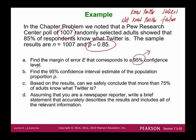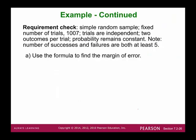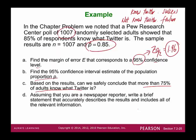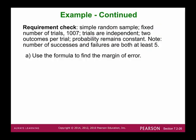Since we have a 95% confidence level, the critical z-score from Table A2 is 1.96. Find a 95% confidence interval to estimate population proportion P. Based on the result, can we safely conclude that more than 75% of adults know what Twitter is? First, check all requirements. It's a simple random sample — randomly selected. The binomial conditions are satisfied: fixed number of trials (1,007), trials are independent, two outcomes per trial.